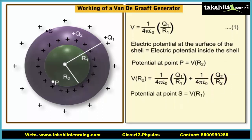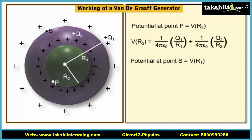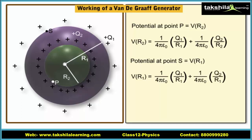The potential at any point S on the surface of the outer sphere is Vr1. This potential is due to the charge on both the outer sphere as well as the charge on the inner sphere. Here, Vr1 is equal to (1/4πε₀)(Q1/R1) + (1/4πε₀)(Q2/R1). Here, (1/4πε₀)(Q1/R1) is the potential due to the charge on the outer sphere, and (1/4πε₀)(Q2/R1) is the potential due to the charge on the inner sphere.